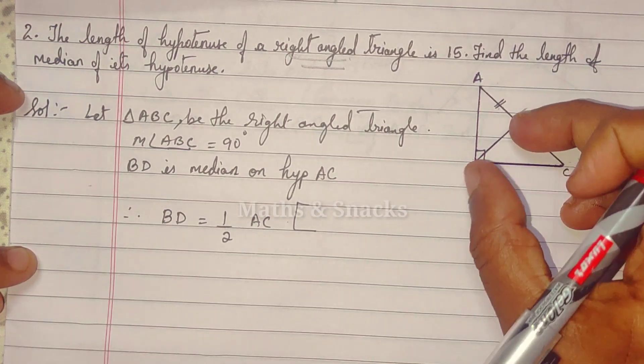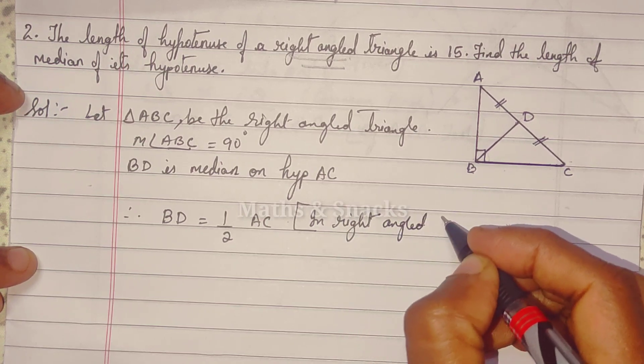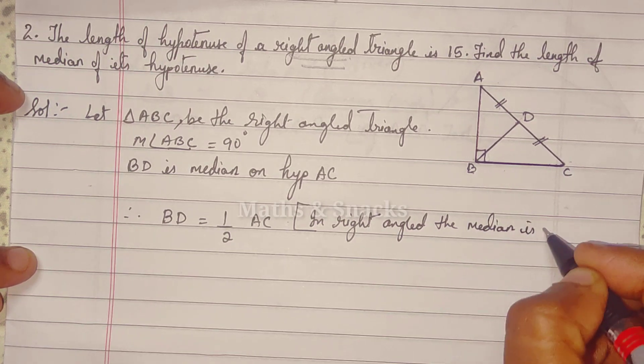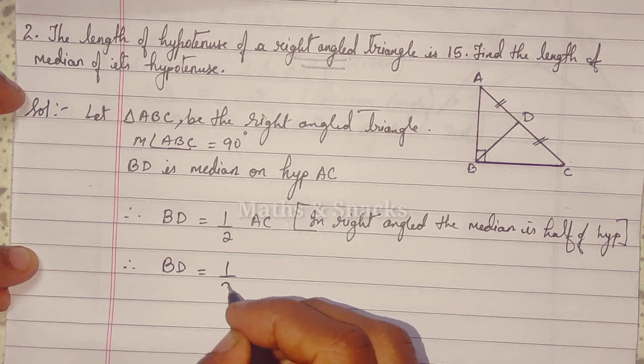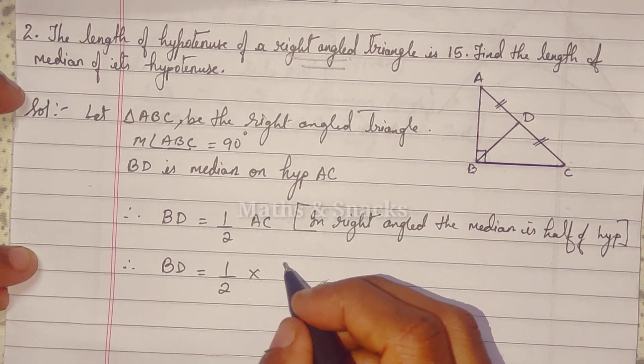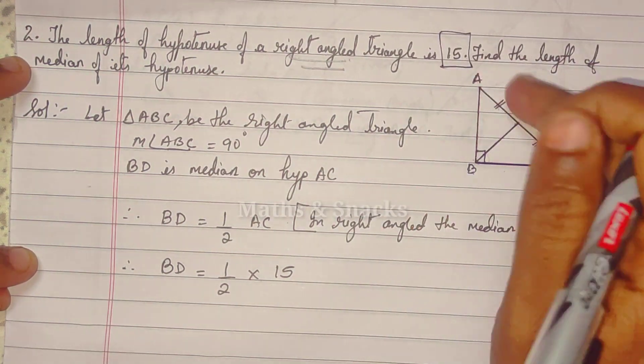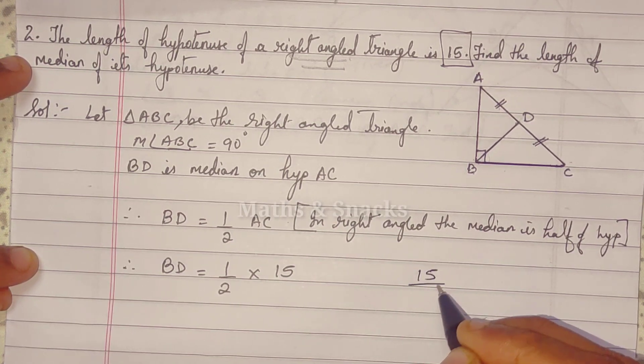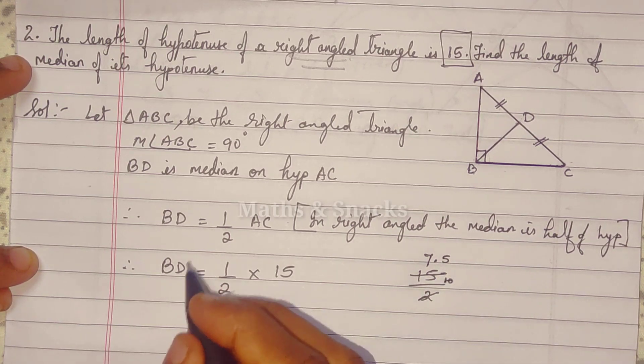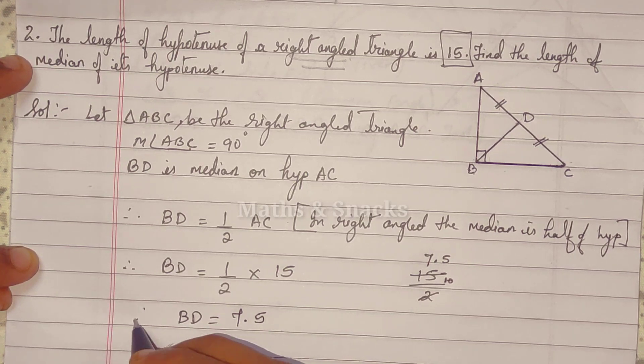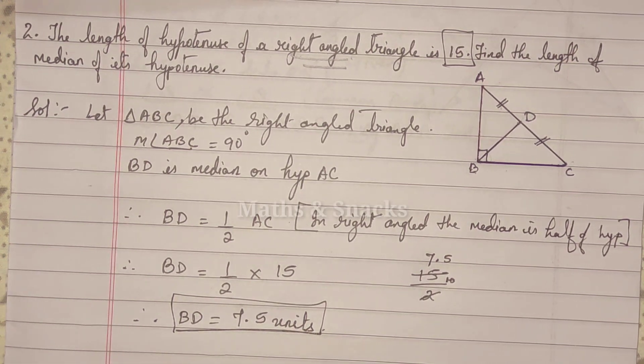So in a right angle, the median is half of the hypotenuse. So therefore, BD is equal to half into AC. So AC is how much? 15. The length of hypotenuse of a right angle is 15. So when we divide, 2 into 7 is 14, 2 into 5 is 10. So therefore, BD is equal to 7.5. Centimeter, meter, nothing they have given, so units. So BD equals 7.5 units.